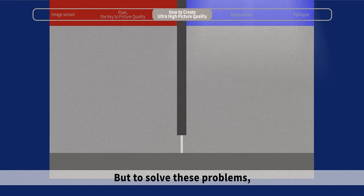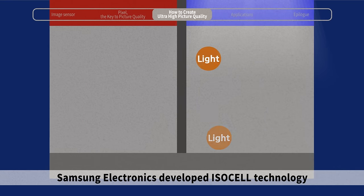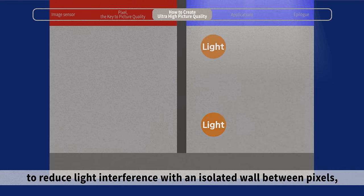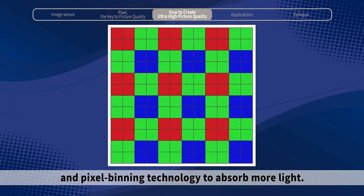But to solve these problems, Samsung Electronics developed ISOCELL technology to reduce light interference with an isolated wall between pixels, and pixel-bending technology to absorb more light.